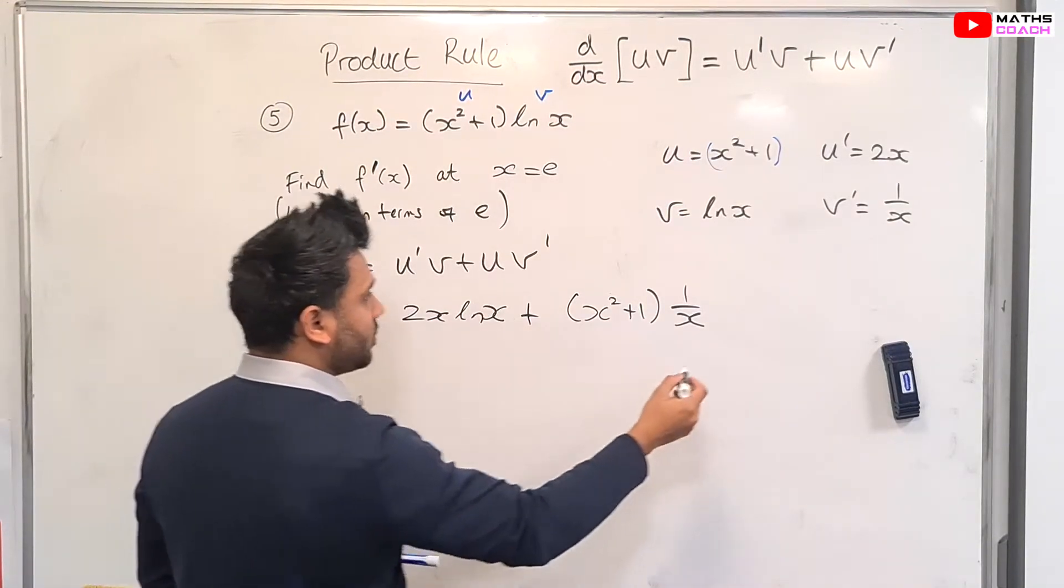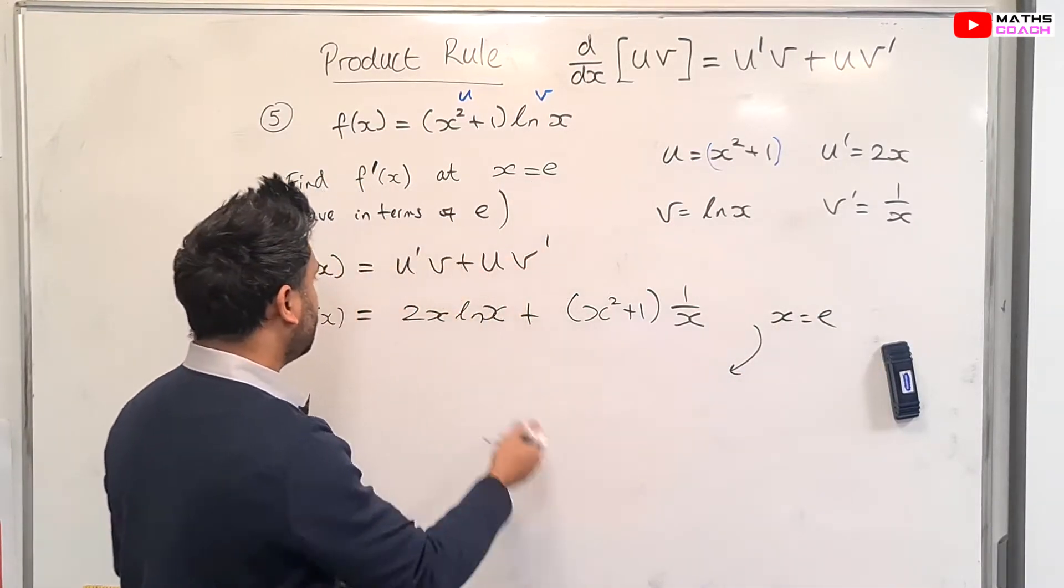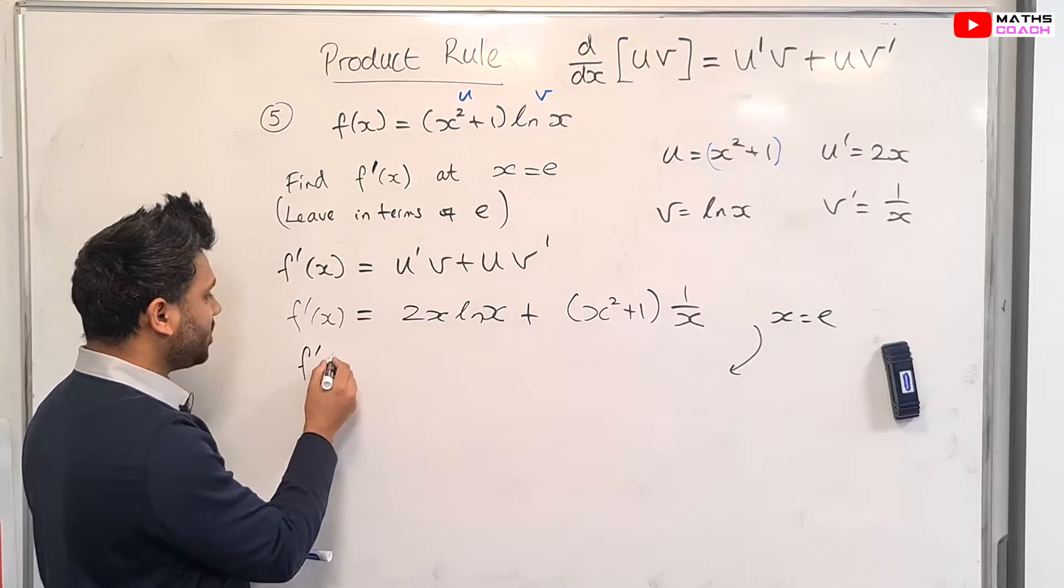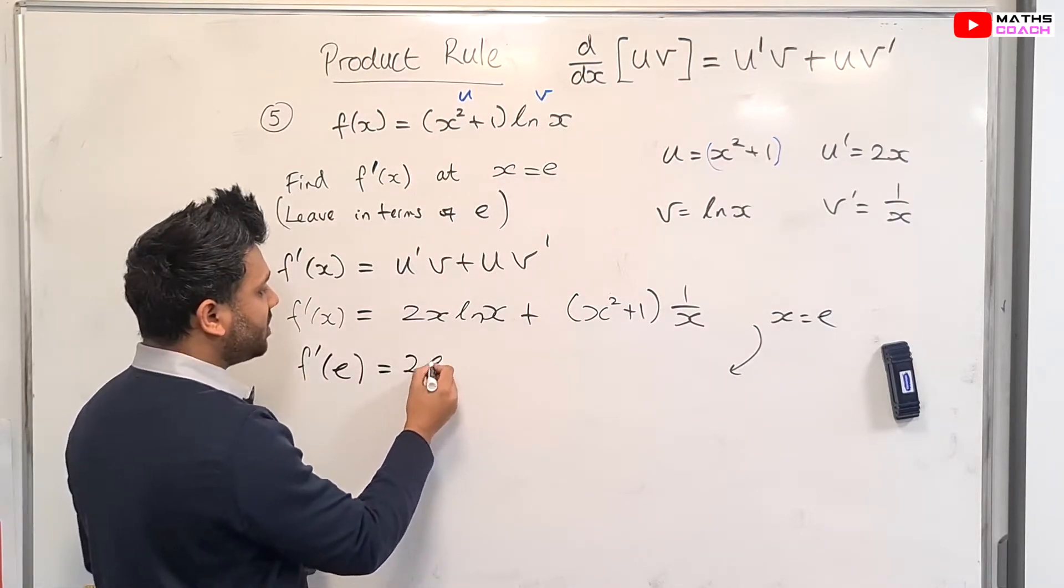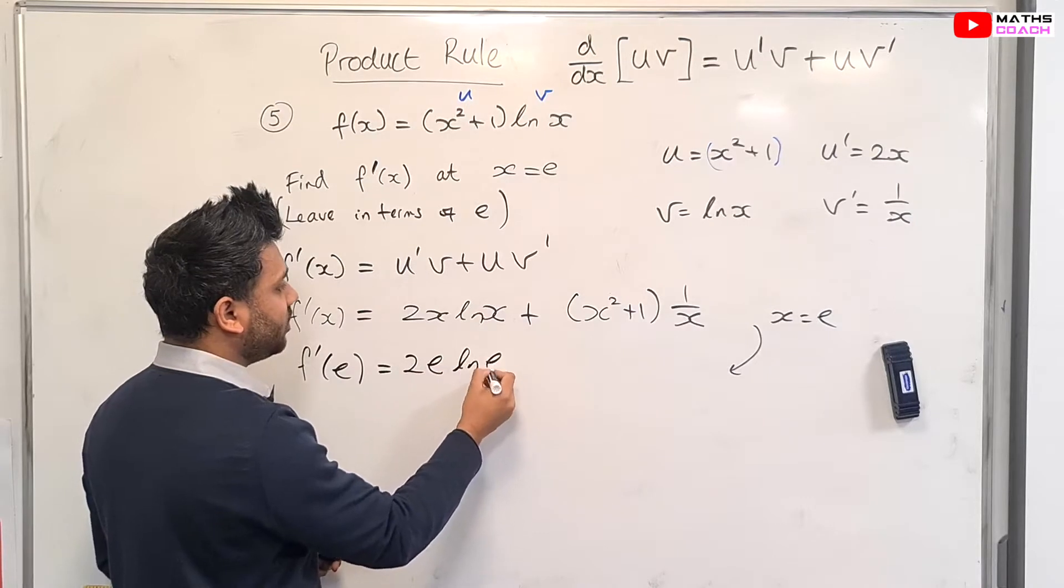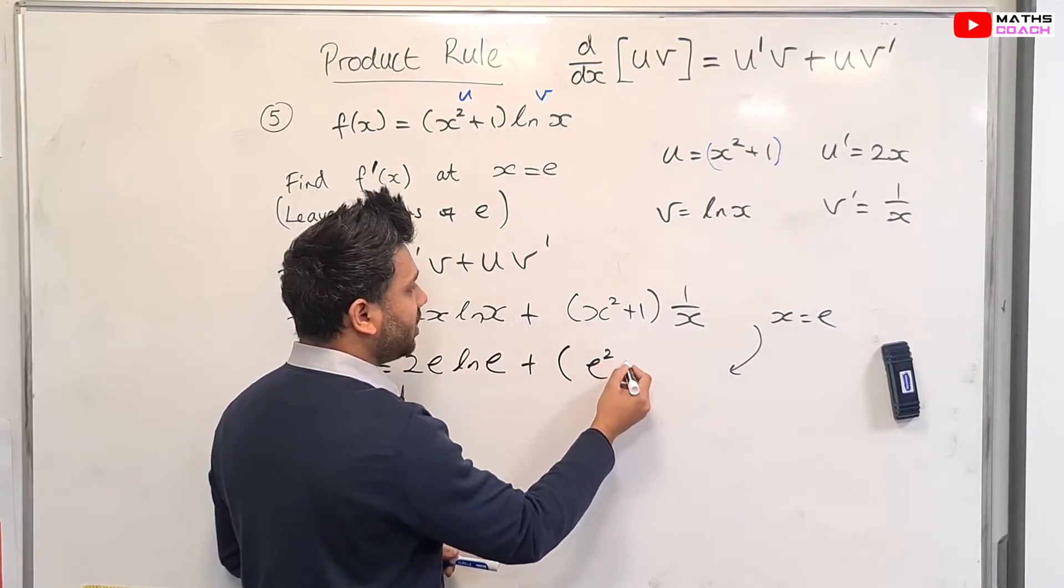Now we need to substitute. So the next step is to substitute for x where x equals e. So if we do this, in other words, f' where x equals e equals to 2 times e times ln of e plus, in the bracket,